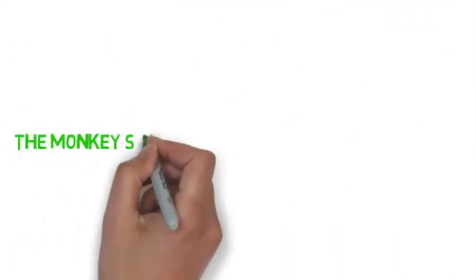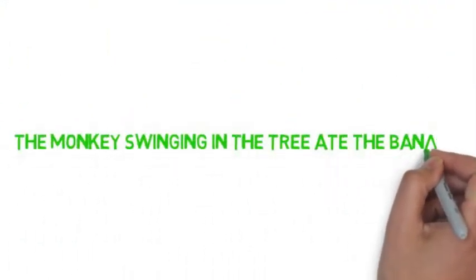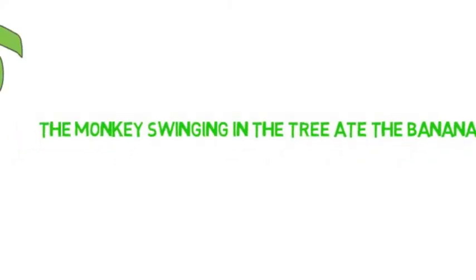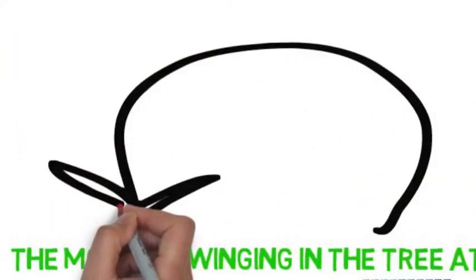For example, if I write the monkey swinging in the tree ate the banana, swinging in the tree is the modifier because it describes the word monkey.